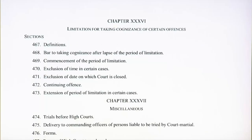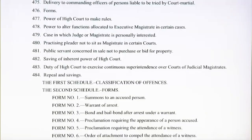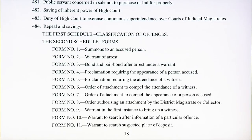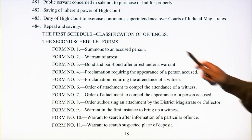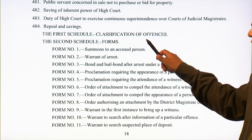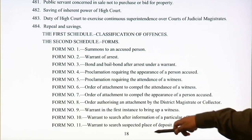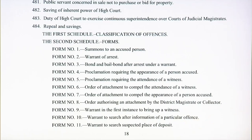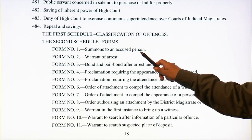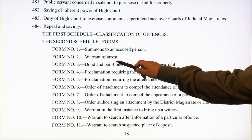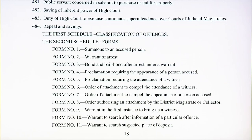Chapter 35 deals with irregular proceedings. Then we have limitation for taking cognizance of certain offences and the miscellaneous provisions. The First Schedule deals with classification of offences, which will be discussed in great detail in the next lecture. The Second Schedule deals with forms — when we talk about all these procedures, what is the manner in which recordings have to be done? If you have to send a summons to an accused person, what is the format? If a warrant is to be sent, what is the format? So it prescribes all of these different forms.